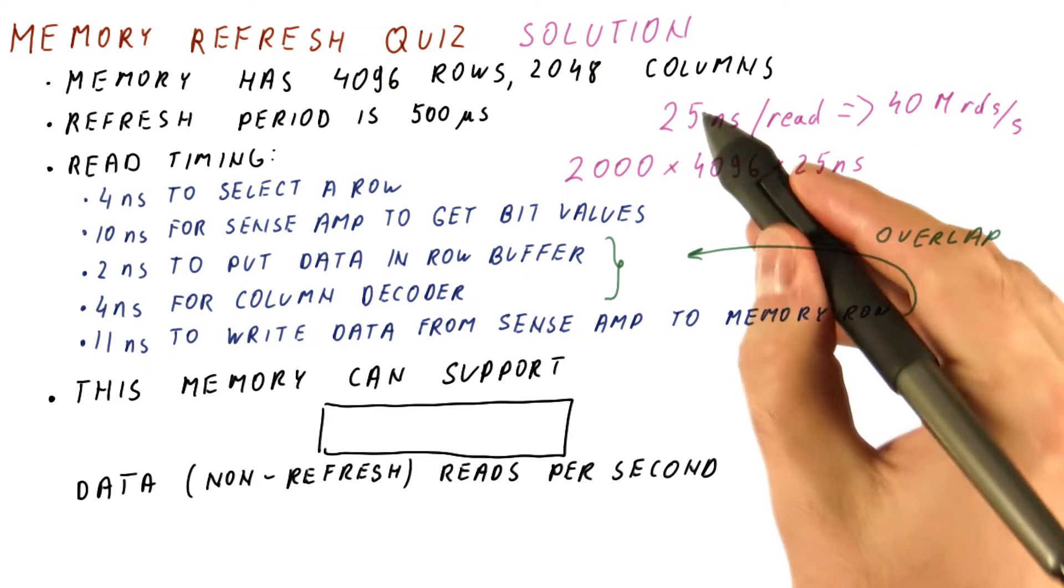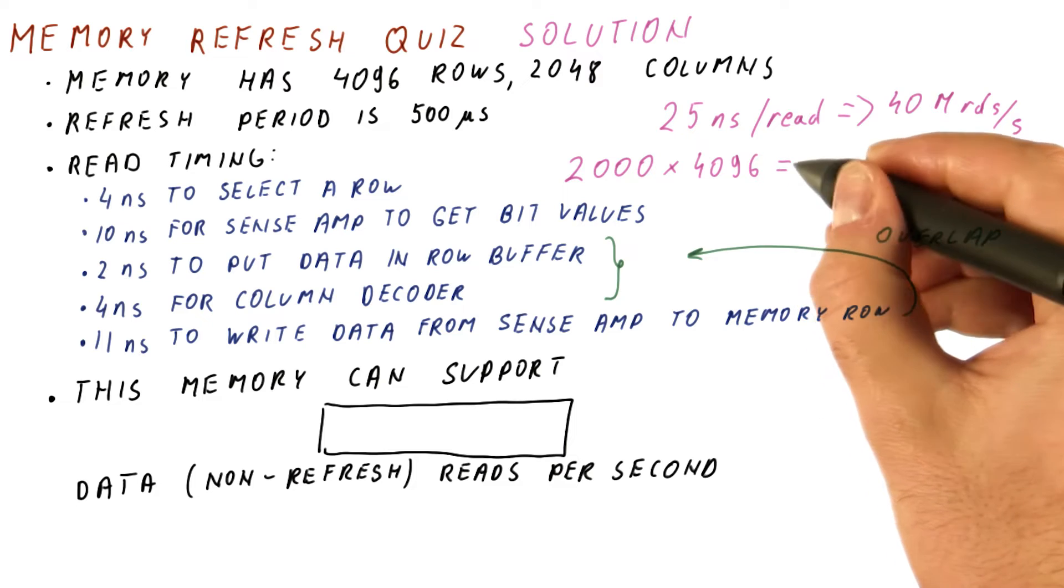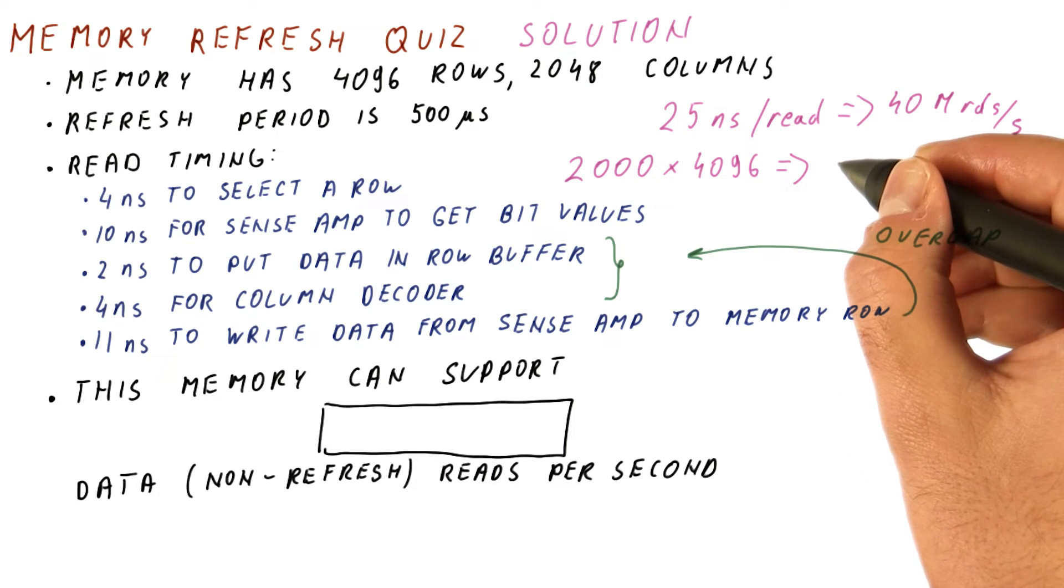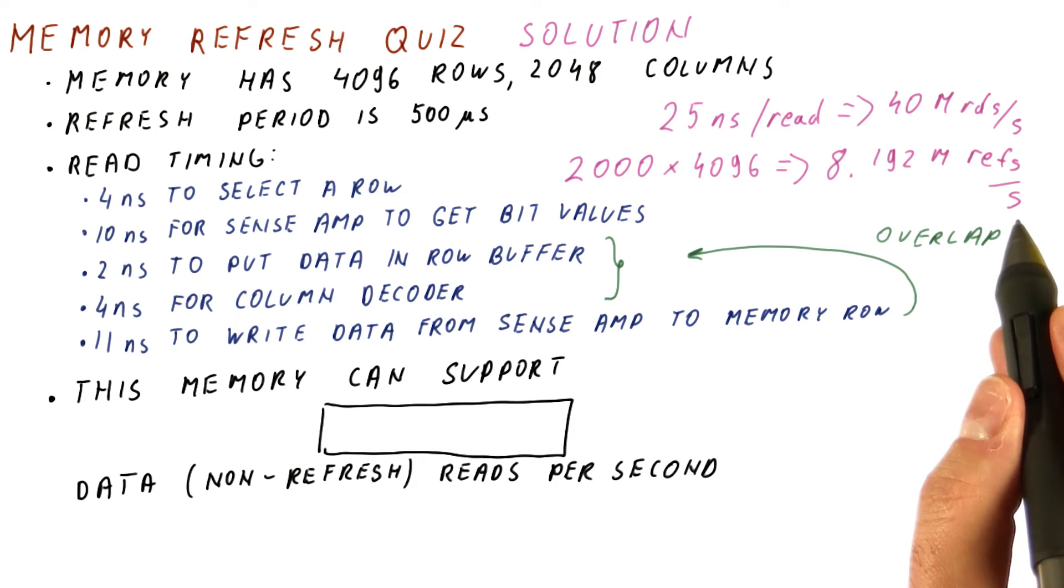But because they have the same timing as reads, we can just compute how many refreshes we have per second. And we end up with 8.192 million refreshes per second.